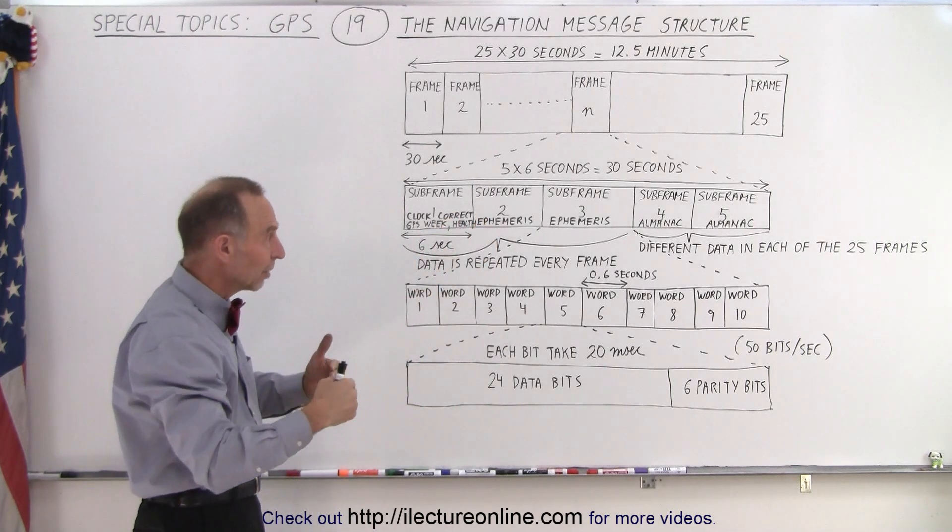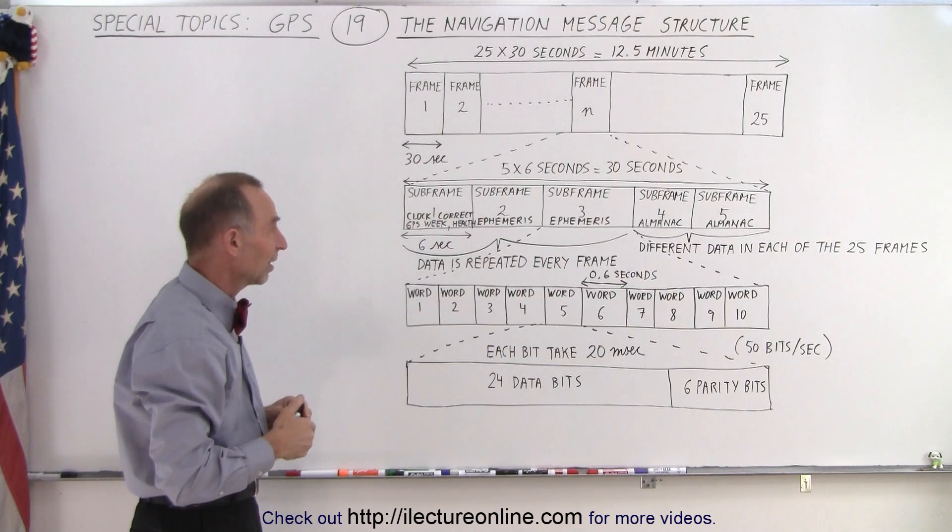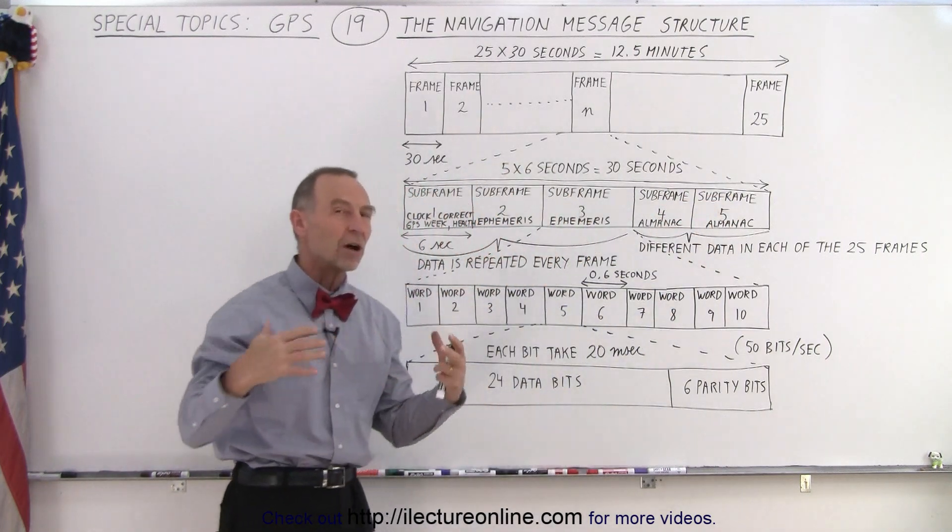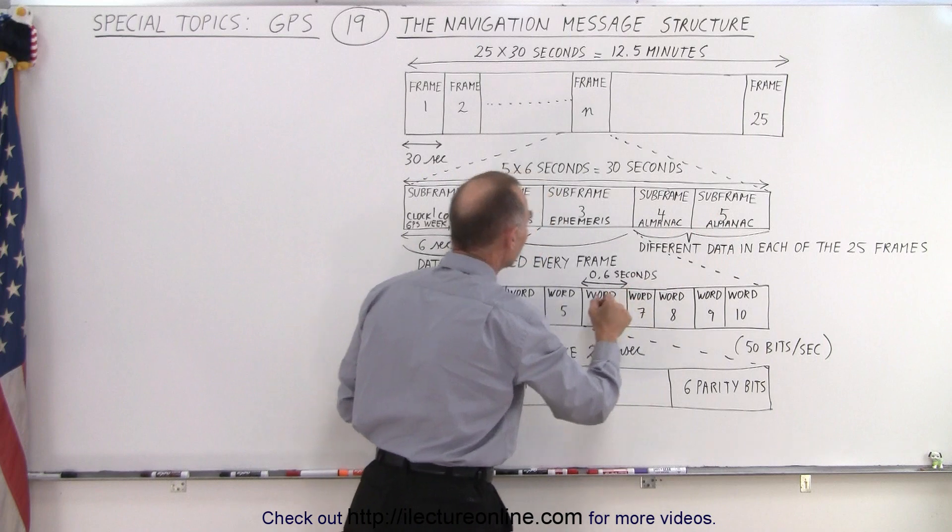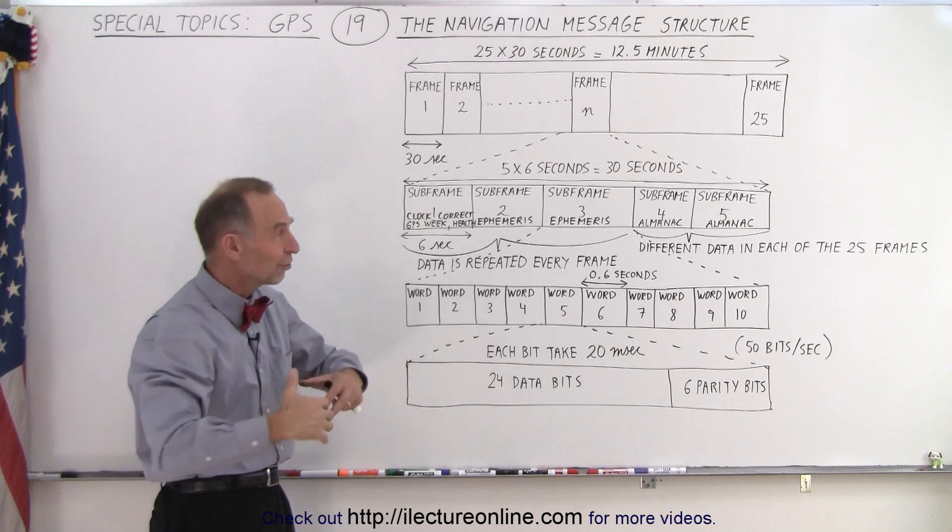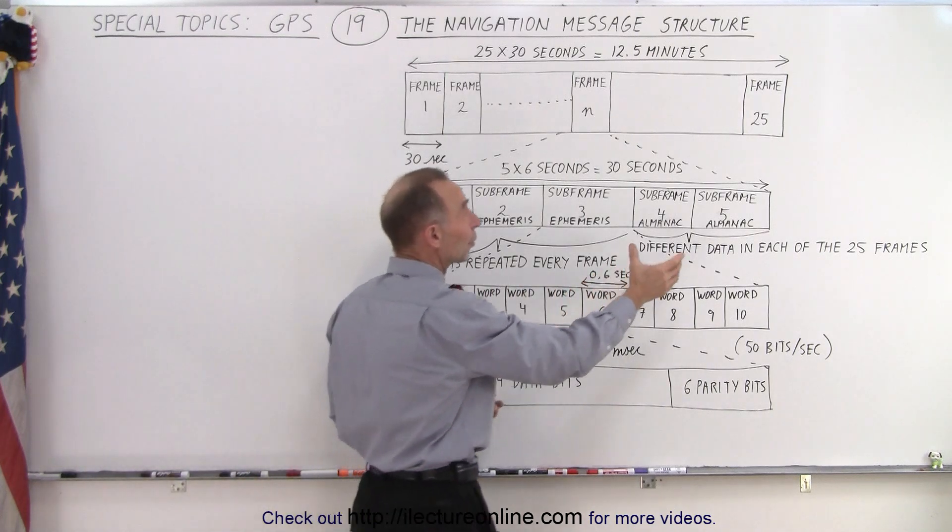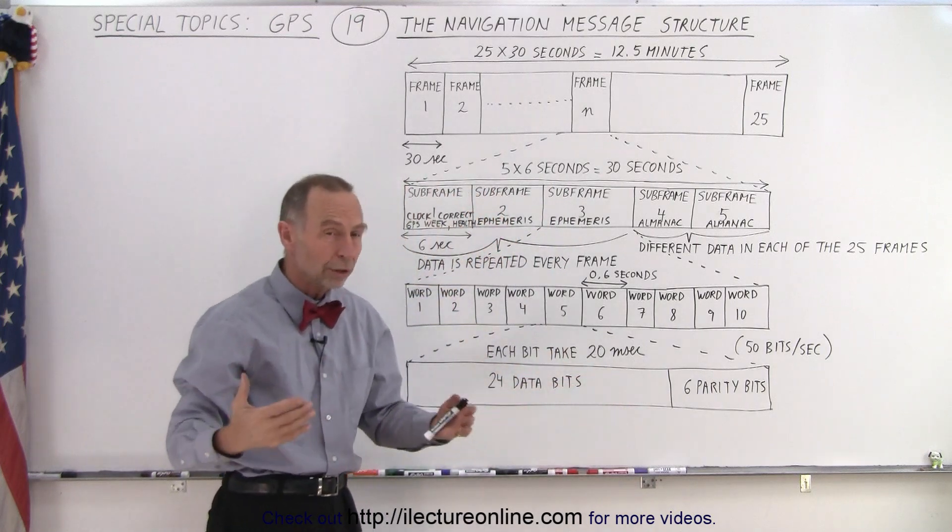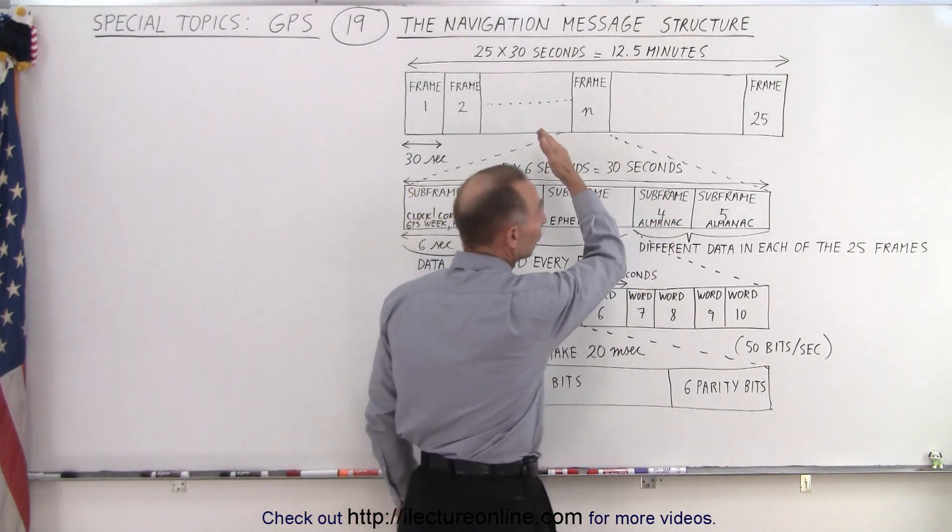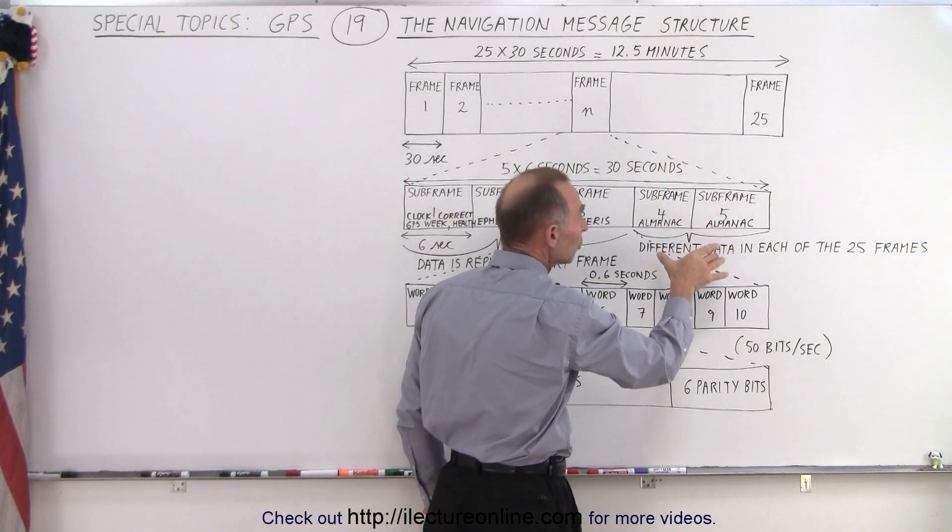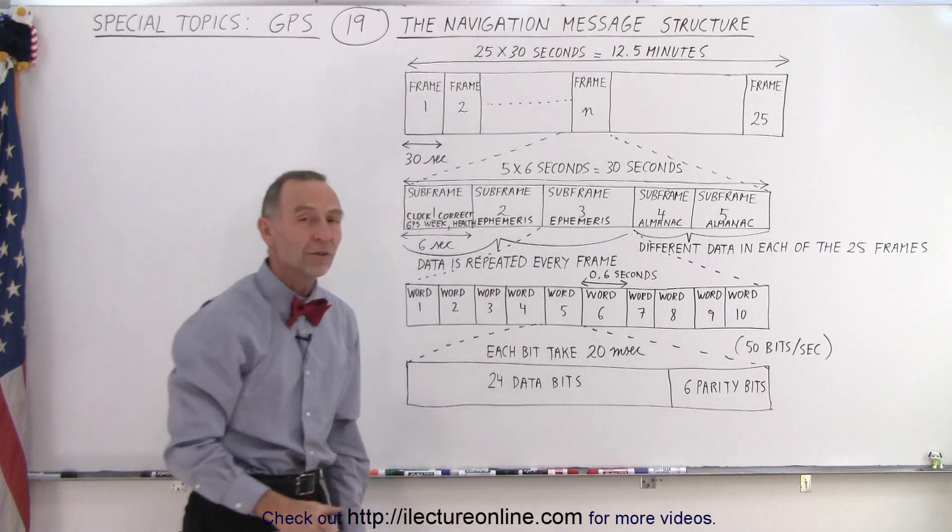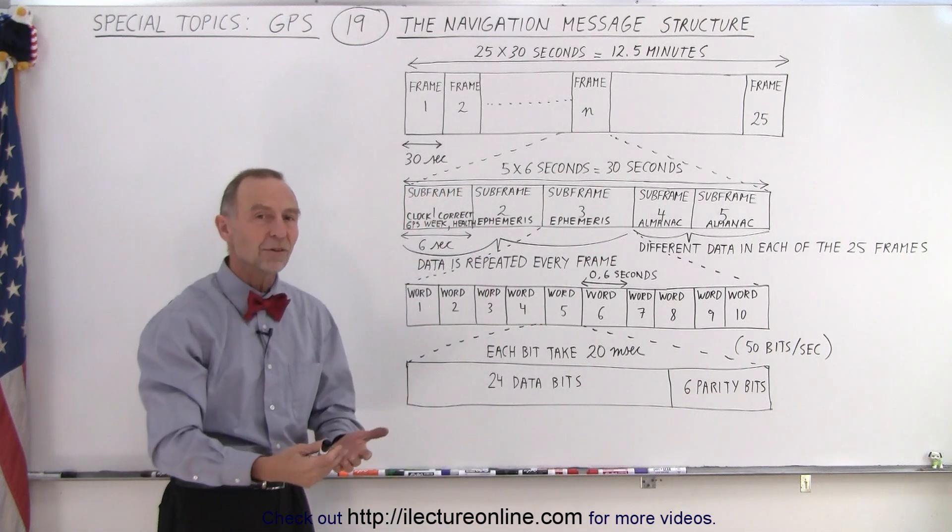The last two subframes, well they contain data of the entire constellation. They contain the almanac data versus subframe 2 and subframe 3, which contain the ephemeris data. Now the almanac data is for the entire constellation, and so it takes a while before all that information is sent, and it can hold information for a total of 32 SVs, space vehicles. And so therefore, we need a total of 25 frames, because these need to be repeated with new data, in such a way that it takes 25 of these subframes to get all the information across. And then that repeats as well.